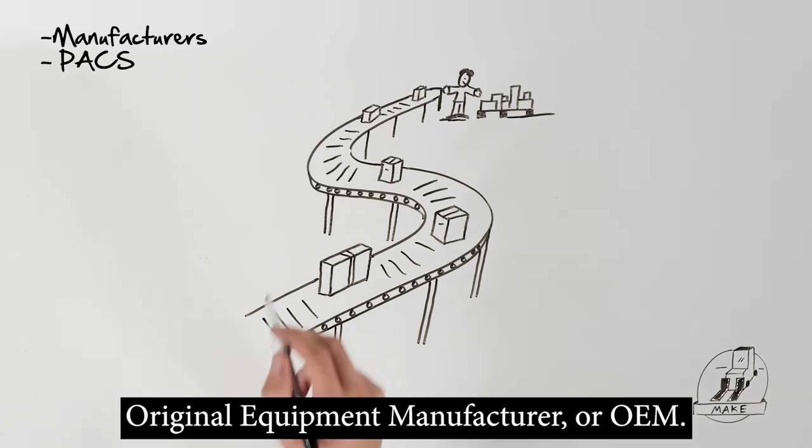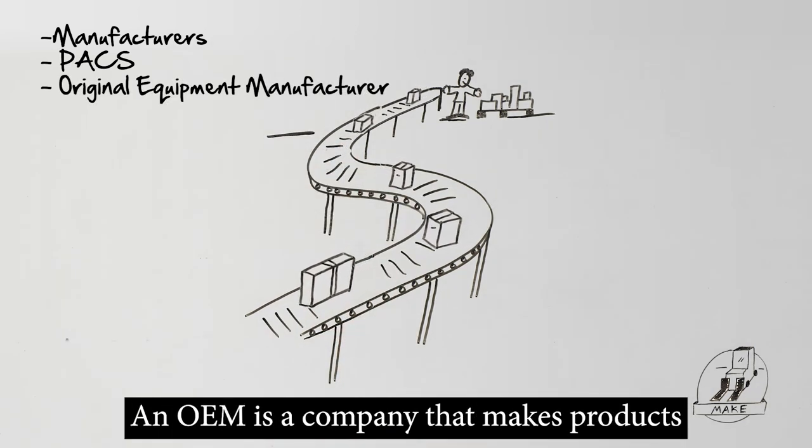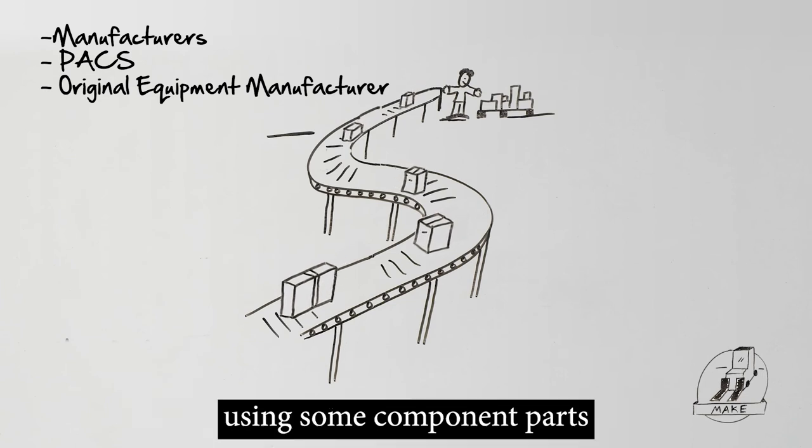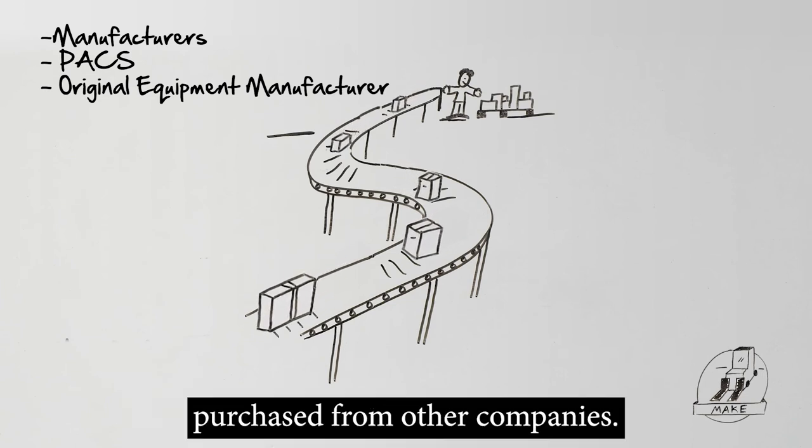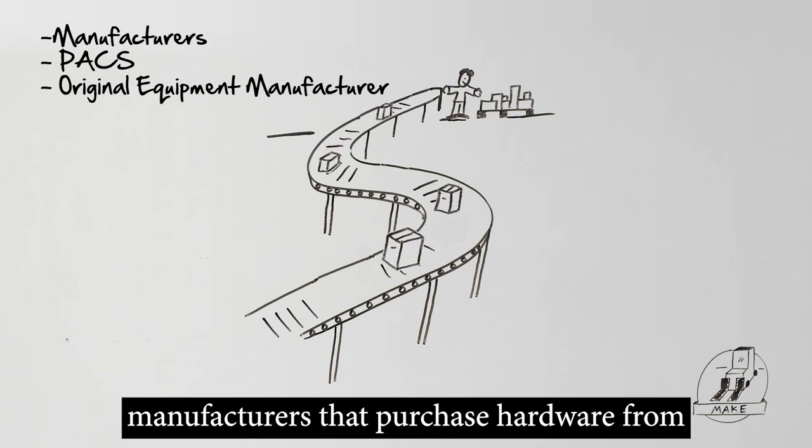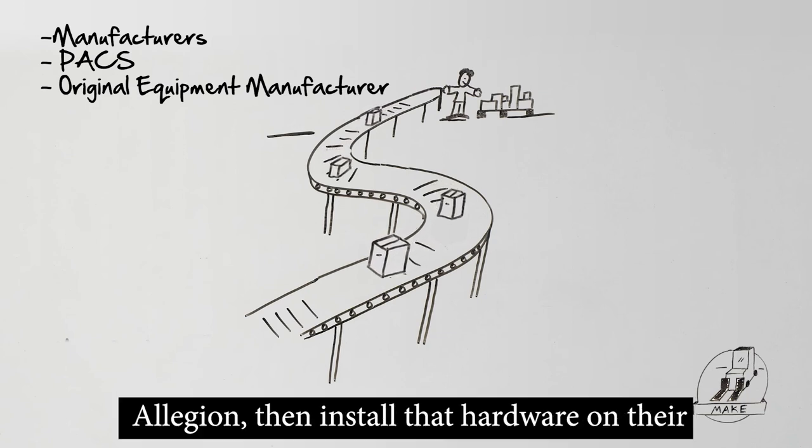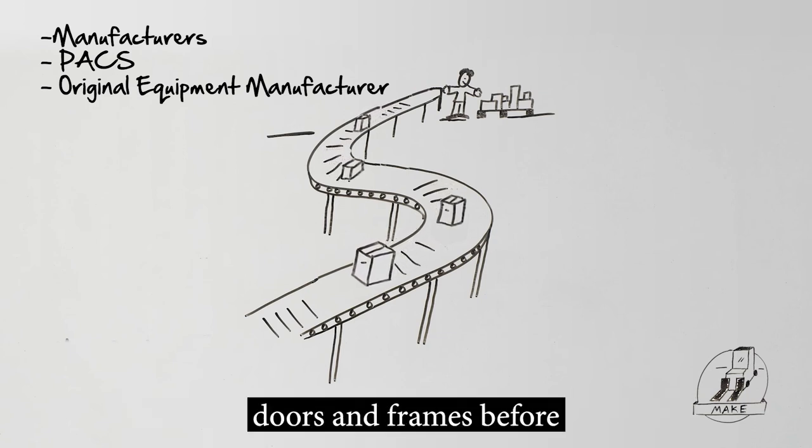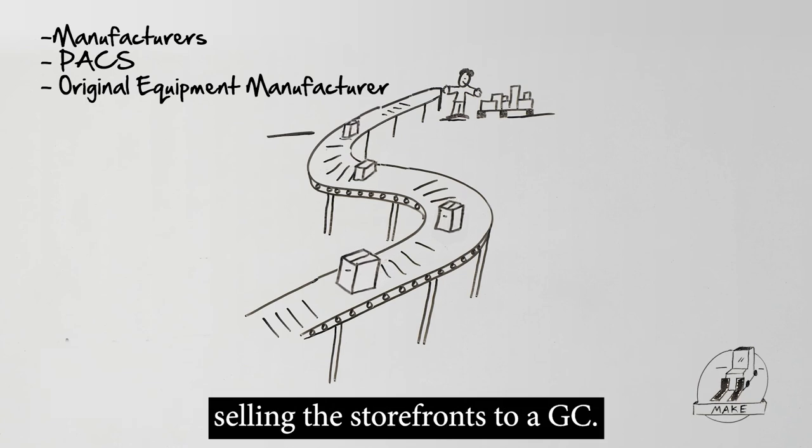You may also hear the term Original Equipment Manufacturer, or OEM. An OEM is a company that makes products using some component parts purchased from other companies. For example, there are aluminum storefront manufacturers that purchase hardware from Allegion, then install that hardware on their doors and frames before selling the storefronts to a GC.